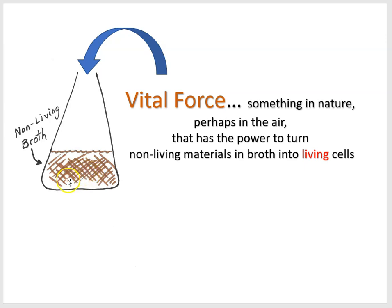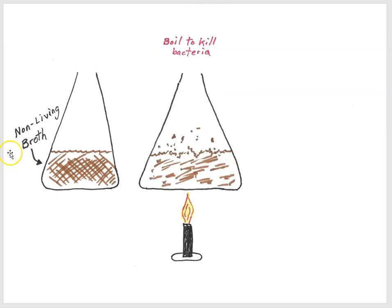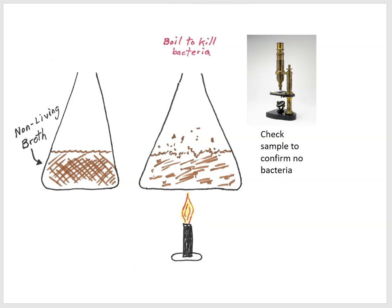So let's take a look at the kind of experiment that scientists did in the late 1700s. First, you take your broth and boil it to make sure you're killing all of the bacteria. If you want to demonstrate spontaneous generation, you have to start with non-living stuff — so you boil to kill any life in the broth.